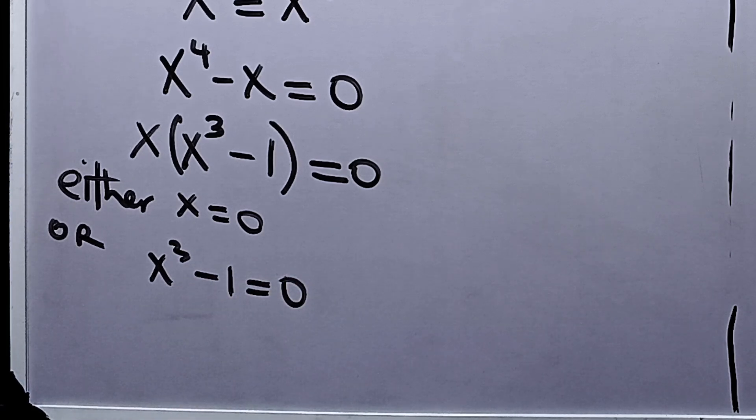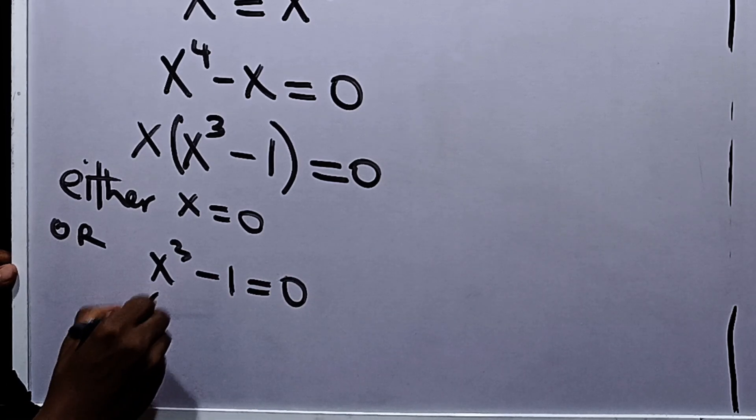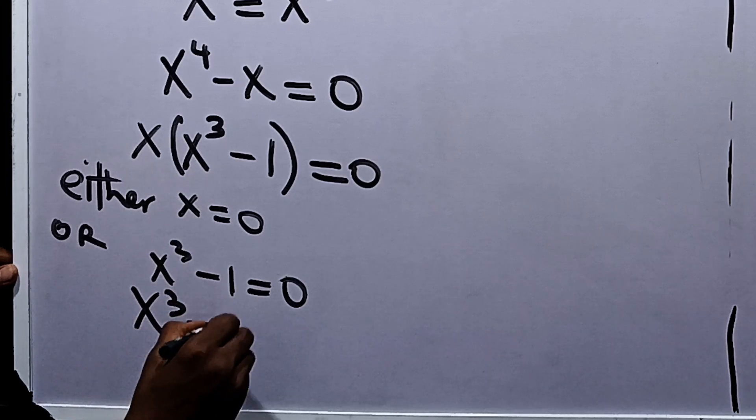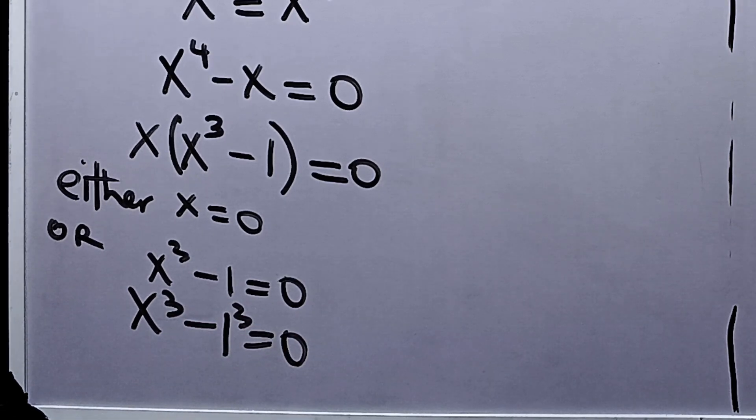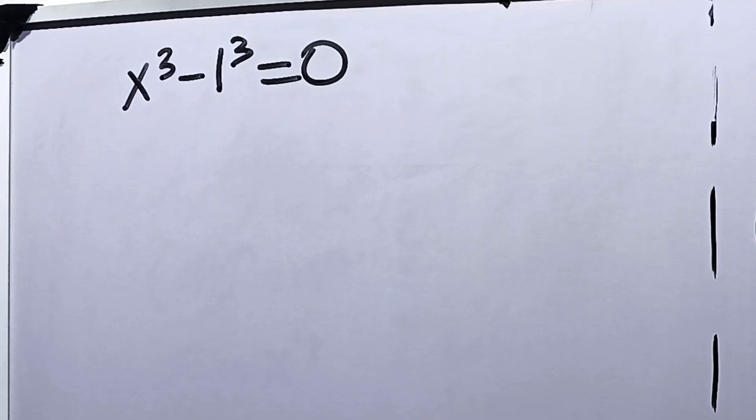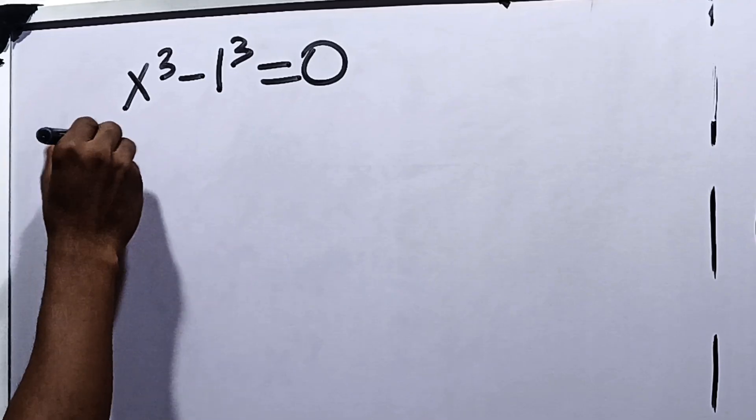Now if x cubed minus 1 is equal to 0, you can write this as x cubed minus 1 cubed. So this is now the difference of 2 cubes. We can say, let's use the law of the difference of 2 cubes to solve this.